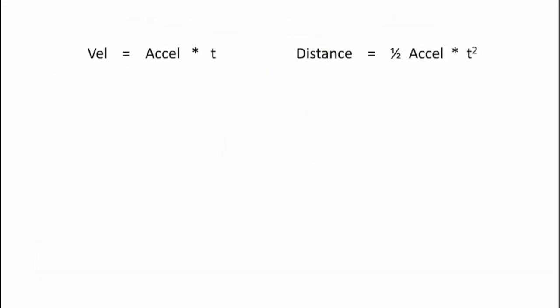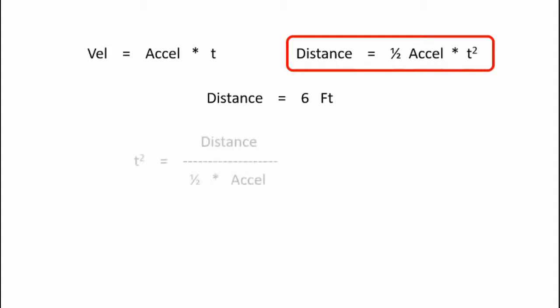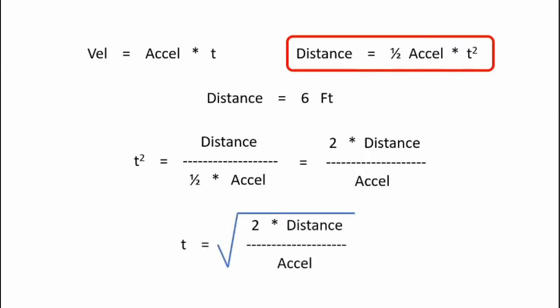There are two equations, but the one we're most interested in is the distance equation. Because we're going to drop our ball from six feet, a known distance, and we want to calculate the time it takes for that ball to fall six feet. So apply a little bit of algebra: t squared is equal to distance divided by one half times acceleration. Applying a little more algebra, t squared is equal to two times distance divided by acceleration. Or t is equal to the square root of two times distance divided by acceleration.